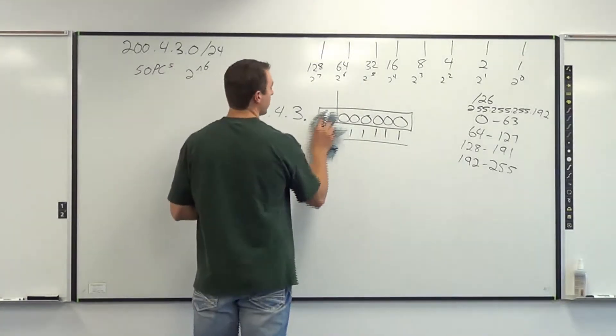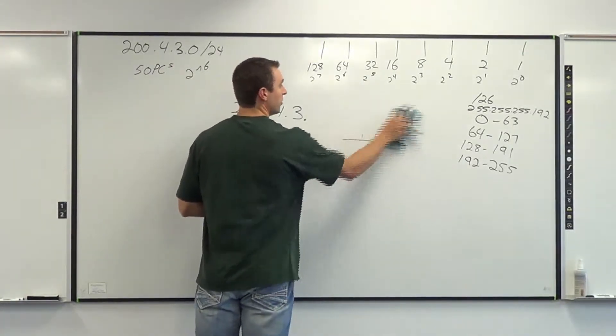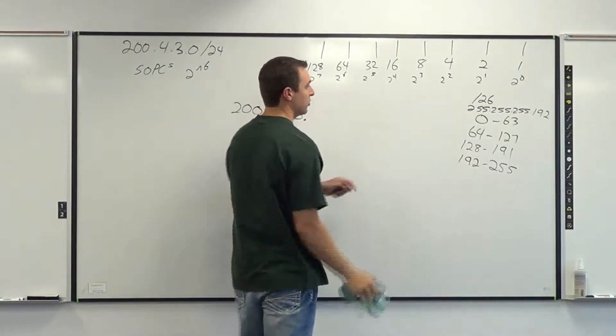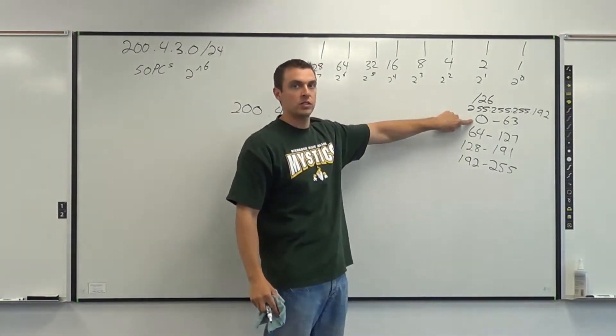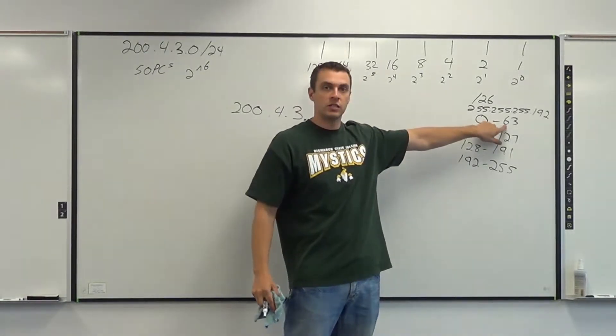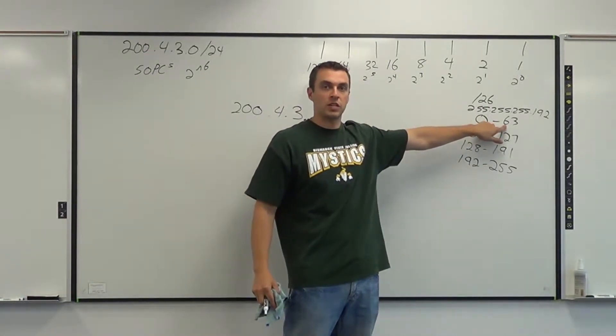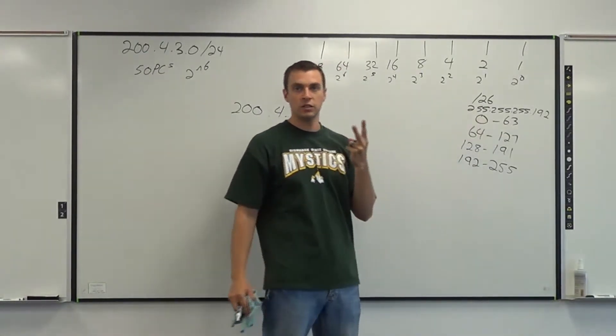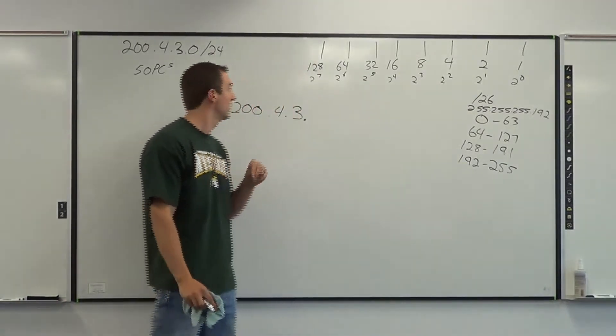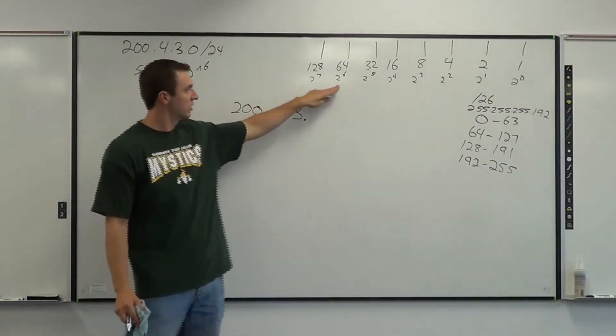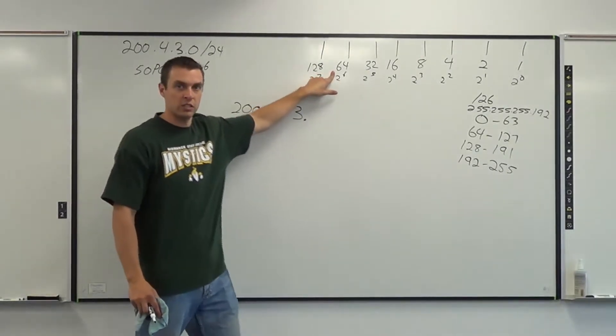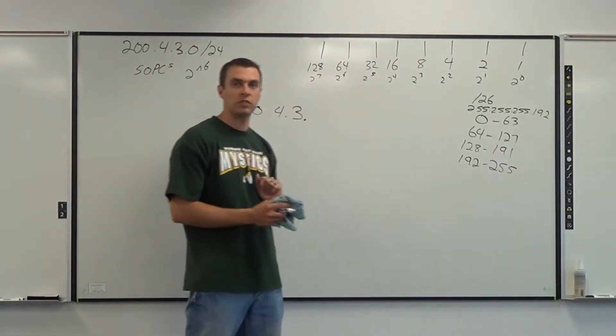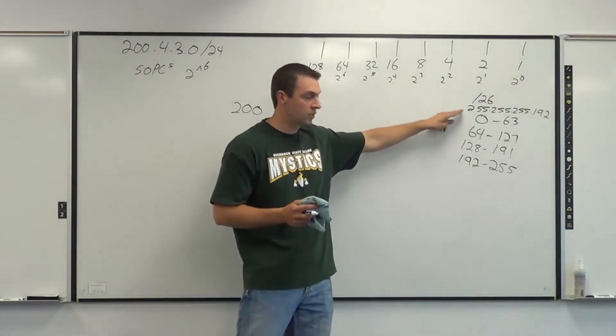One thing that we do need to be aware of, though, is if you remember looking at these ranges here, like 0 through 63, I cannot use the 0, and I cannot use the 63 to assign to a PC. So I am essentially losing two addresses. So I said 2 to the 6, which is 64. What I need to start doing is subtracting 2 off of each one of these numbers, because I cannot use that first, and I cannot use that last.